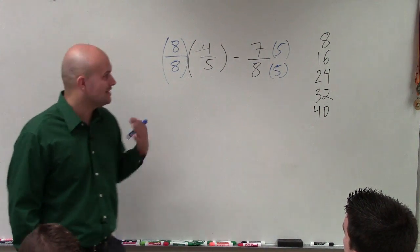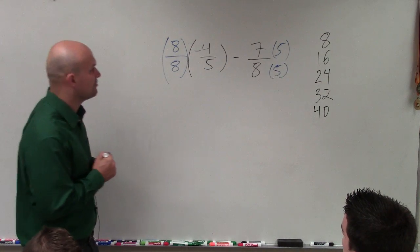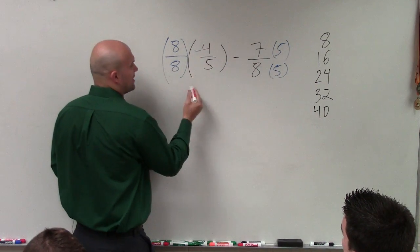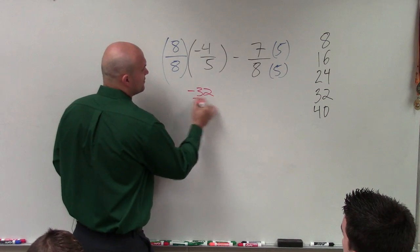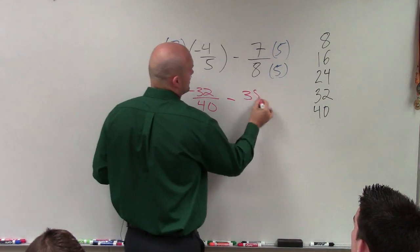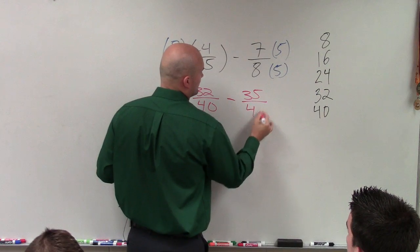So I have negative 32 over 40 minus 35 over 40. Now I have two fractions with common denominators.